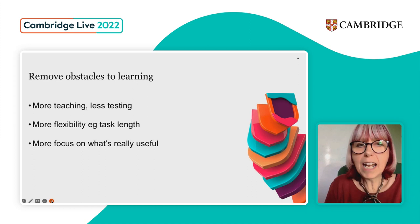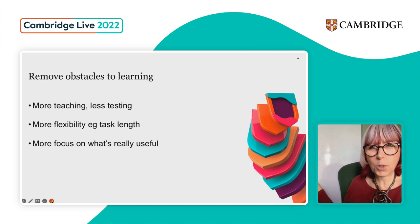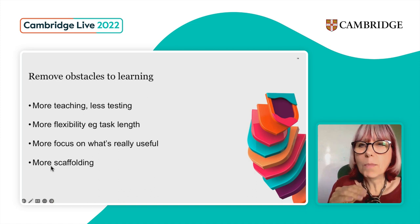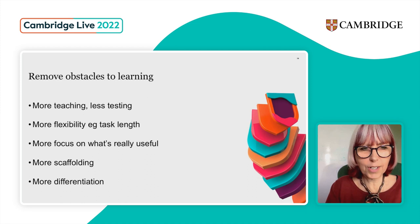Think about what's really useful in class. Is there anything you do that's not that useful — like telling students to copy something off the board when there's a quicker way? We need more scaffolding — helping them get to their goal step by step — and more differentiation for different students.